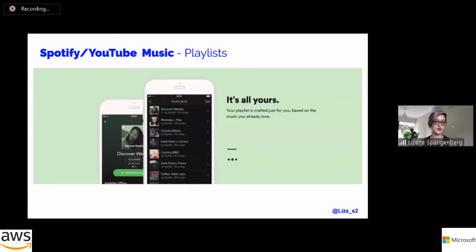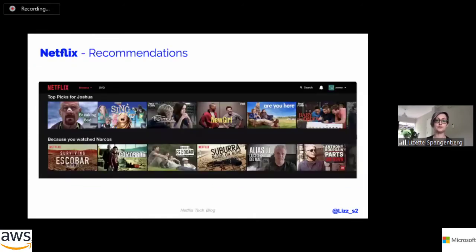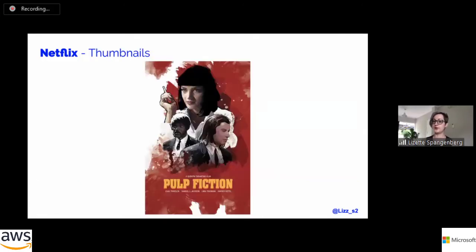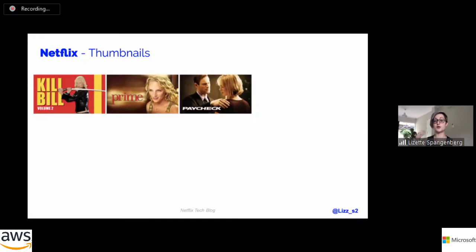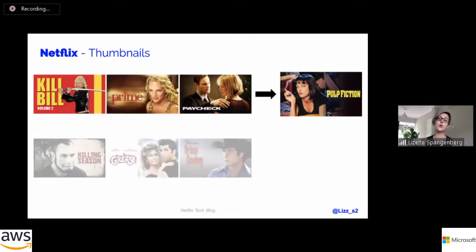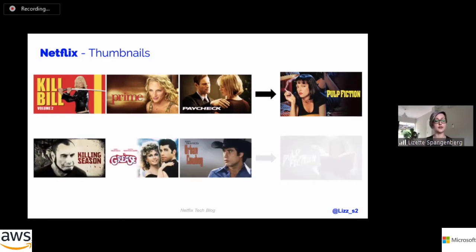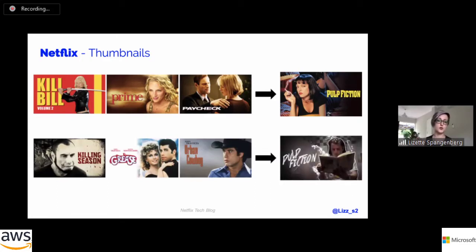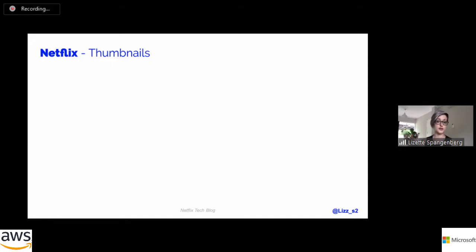One of the most obvious examples: with YouTube Music, Spotify, and all of that, it curates playlists that it thinks are appropriate to you. Netflix is a very good example — giving you recommendations based on other things you've watched. They go a bit further and start customizing the actual thumbnails that you see. If you've watched a lot of movies with Uma Thurman, when it suggests Pulp Fiction it'll show Uma Thurman as the thumbnail; whereas if you've watched a lot of films with John Travolta, it'll show John Travolta. They post all of these things on their blog on Medium — definitely go and check it out, it's really fascinating.